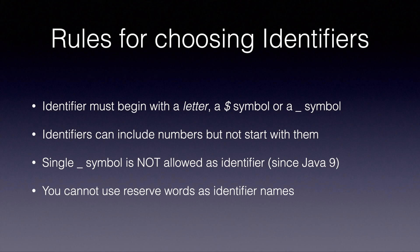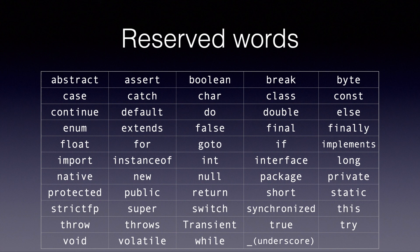The fourth rule is you cannot use reserved words as identifier names. Reserved words are words that have a special meaning in Java, which is why we cannot use them. On the next slide, we will look into all the reserved words that Java has. Don't worry — you don't have to remember all of them for the exam. If you do get a question, Java will mostly use commonly used reserved words. Once you complete the whole book, you will know almost every word and what their meaning is.